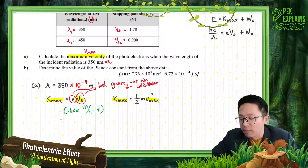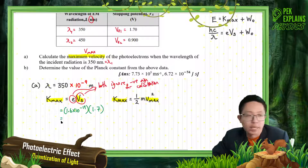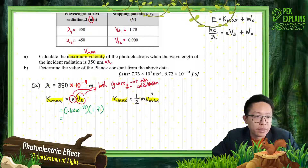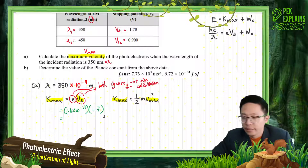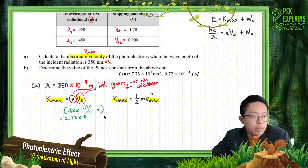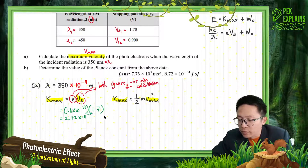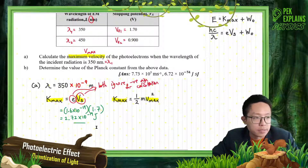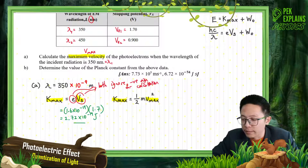So what is the Kmax you get? After multiplying electron charge by stopping potential, I get Kmax = 2.72×10⁻¹⁹ J. You can punch your calculator by yourself and verify my answer.